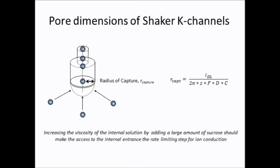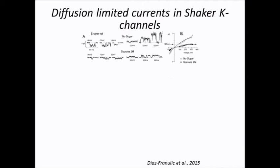Using the equation in the slide, where IDL is the voltage-independent current, Z is the charge of the ion, F is the Faraday constant, D is the diffusion coefficient for potassium in a solution containing 2 molar sucrose, and C is the concentration of the permeant cation. We measured the radius of capture of wild-type, P475D substitution, and as a control of charge introduction, the P475Q variant.